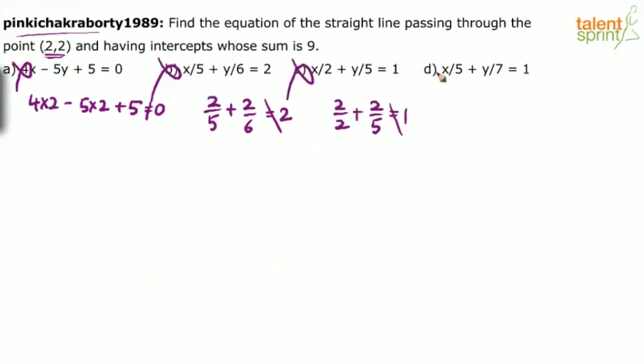Option D should be the answer. When A, B, C are wrong, option D has to be correct. But I feel even option D will not satisfy because if it passes through 2, 2, then 2 by 5 plus 2 by 7 should equal 1. I don't think 2 by 5 and 2 by 7 will add up to 1. 2 by 5 is 40 percentage, 2 by 7 is approximately 28 percentage. That will be approximately 0.68, it is not 1. So D also is wrong. So I think all the options are wrong here. None of the option is correct.